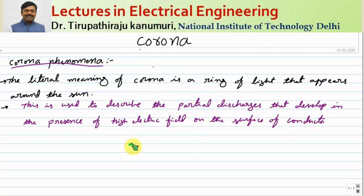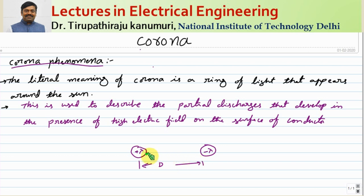Take a power system as an example — it will have a minimum of two conductors. Let us assume one conductor carries a positive charge and the second carries a negative charge. Assume the radius of each conductor is r (small) and the distance of separation between them is D (capital). The electric field intensity at the surface of the conductor can be defined as lambda divided by 2 pi epsilon-naught times r.